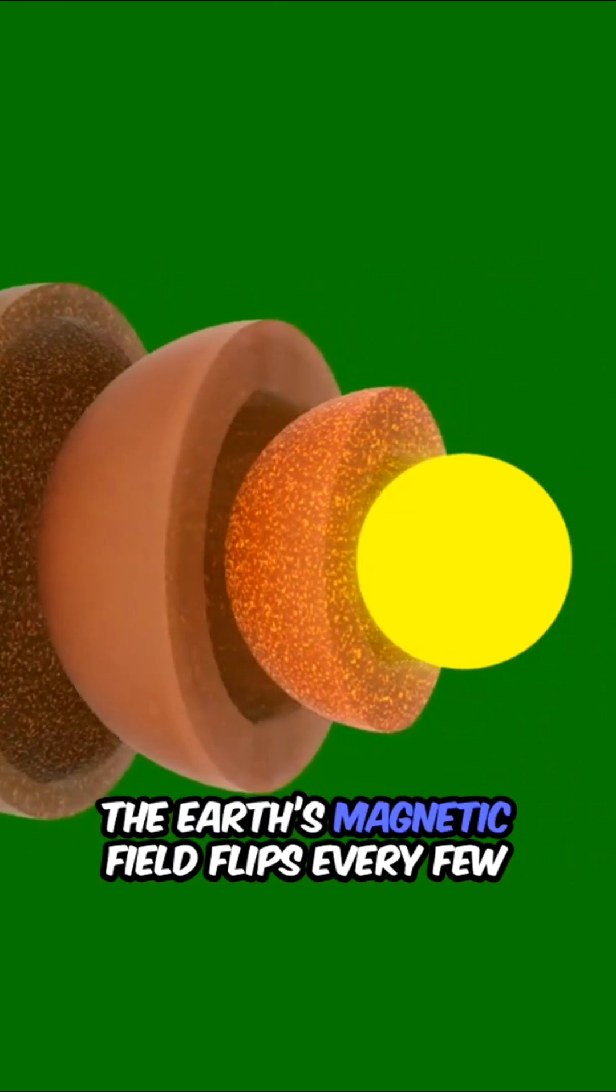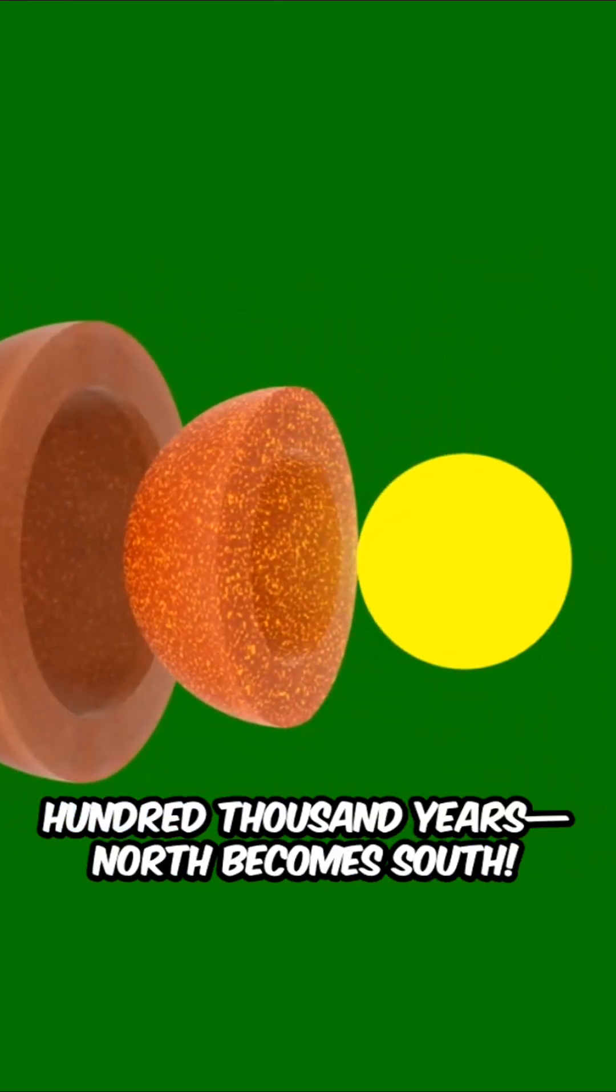Fact number two. The Earth's magnetic field flips every few hundred thousand years. North becomes south.